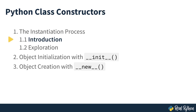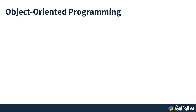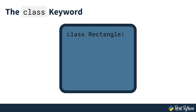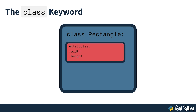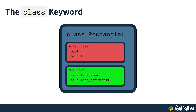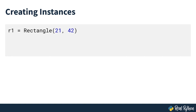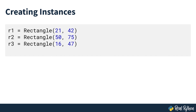The instantiation process. Like many other programming languages, Python supports object-oriented programming. At the heart of Python's object-oriented capabilities you'll find the class keyword, which allows you to define custom classes that can have attributes for storing data and methods for providing behavior. Once you have a class to work with, you can start creating new instances or objects of that class, which is an efficient way to reuse functionality in your code.